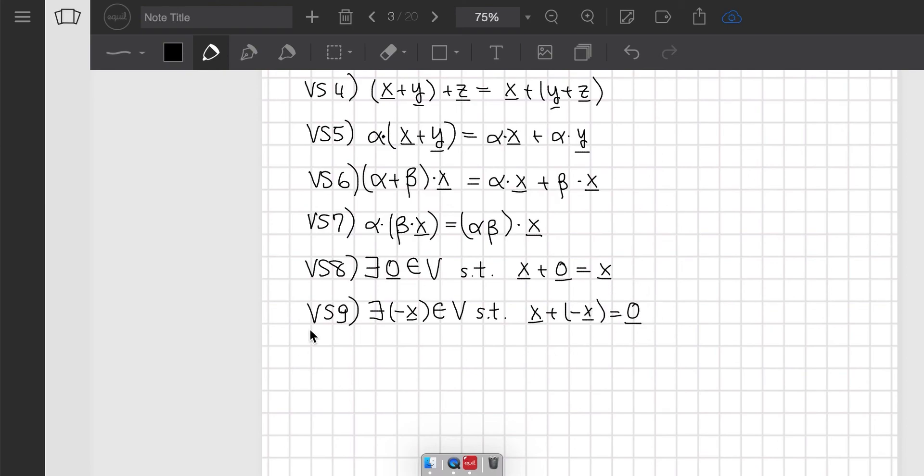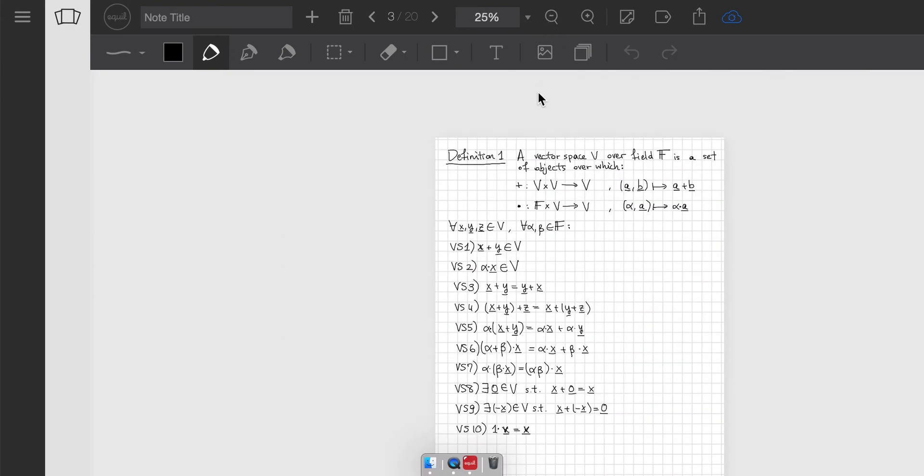And then finally, we have the last vector space condition, and that is that if we take the identity element of the vector field F, which we denote by 1, and do dot x, then it gives x. And again, these have to be satisfied for every vector x, y, z belonging to V, and every element alpha and beta of the field F.